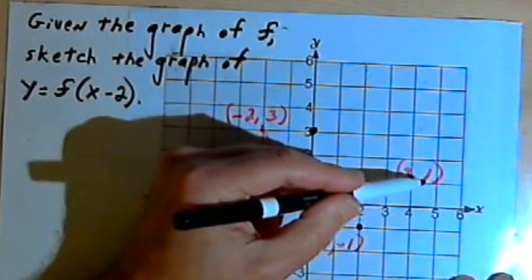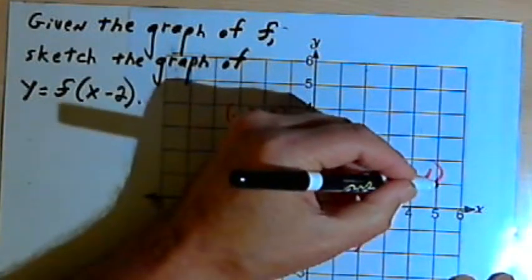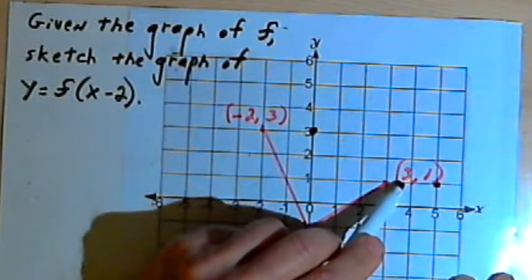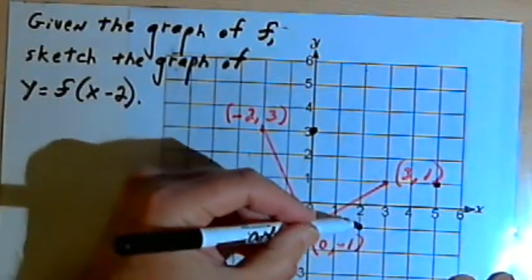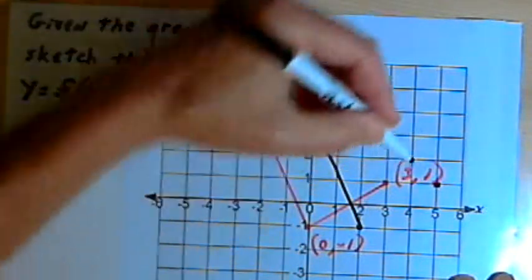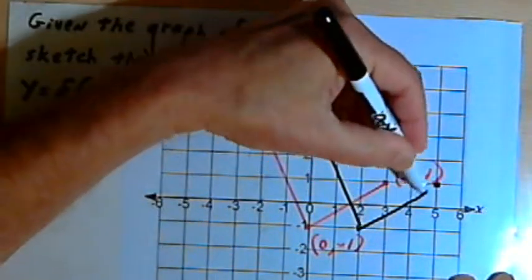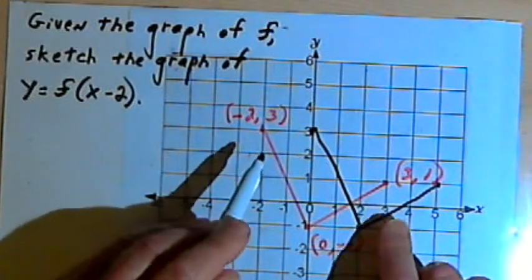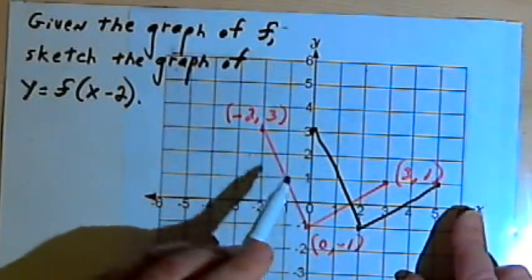(3,1) is going to turn into (5,1) after I add 2 to this x-coordinate, 3. And then if I connect these points, what I'm going to see is that the graph has, in fact, shifted two units over to the right.